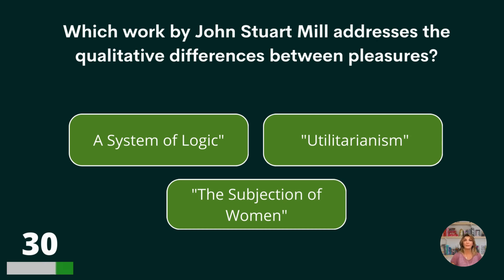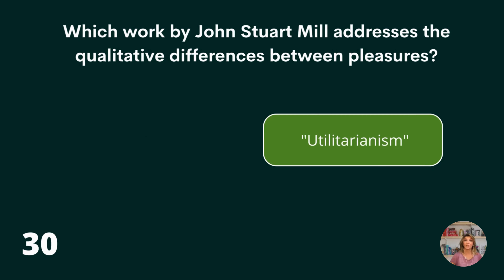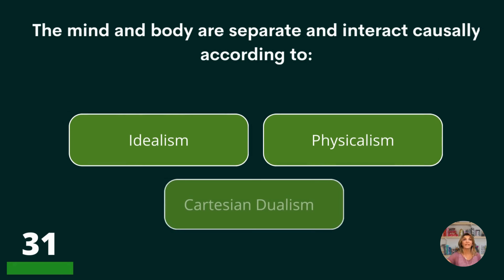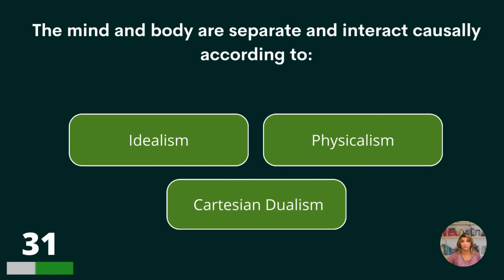Which work by John Stuart Mill addresses the qualitative differences between pleasures? A System of Logic, Utilitarianism, or The Subjection of Women? Utilitarianism.